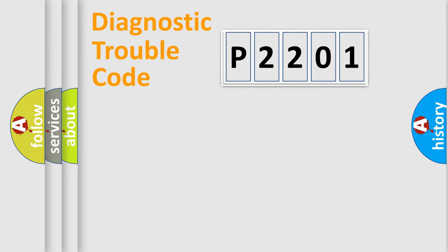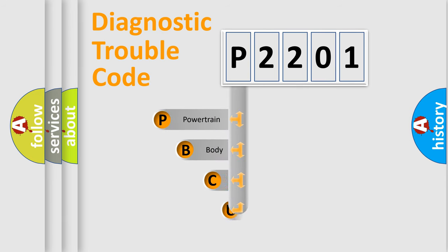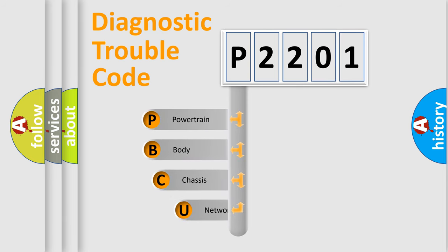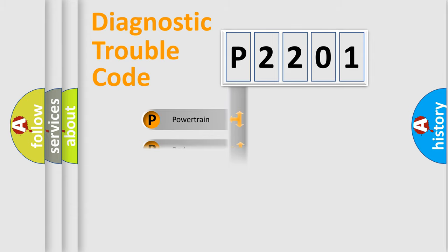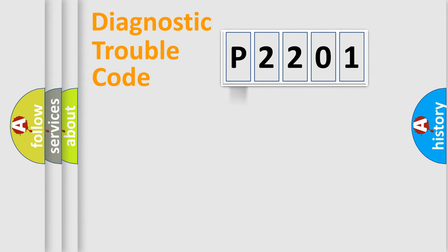Let's start by looking at the history of diagnostic fault code composition according to the OBD2 protocol, which is unified for all automakers since 2000. We divide the electric system of an automobile into four basic units: Powertrain, Body, Chassis, and Network.